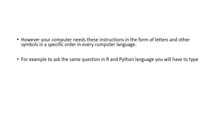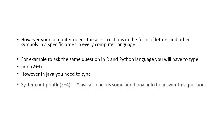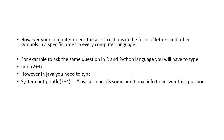For example, to ask the same question in R or Python language, you will have to type: print(2+4). However, in Java, you need to type: System.out.println(2+4) and then add a semi-colon. If you forget to type this semi-colon, Java will not answer your question. Similarly, a new language called Ring has been developed — I think by an Egyptian programmer, around 2015 or 2016. It is a very simple and beautiful language that you can learn very quickly.